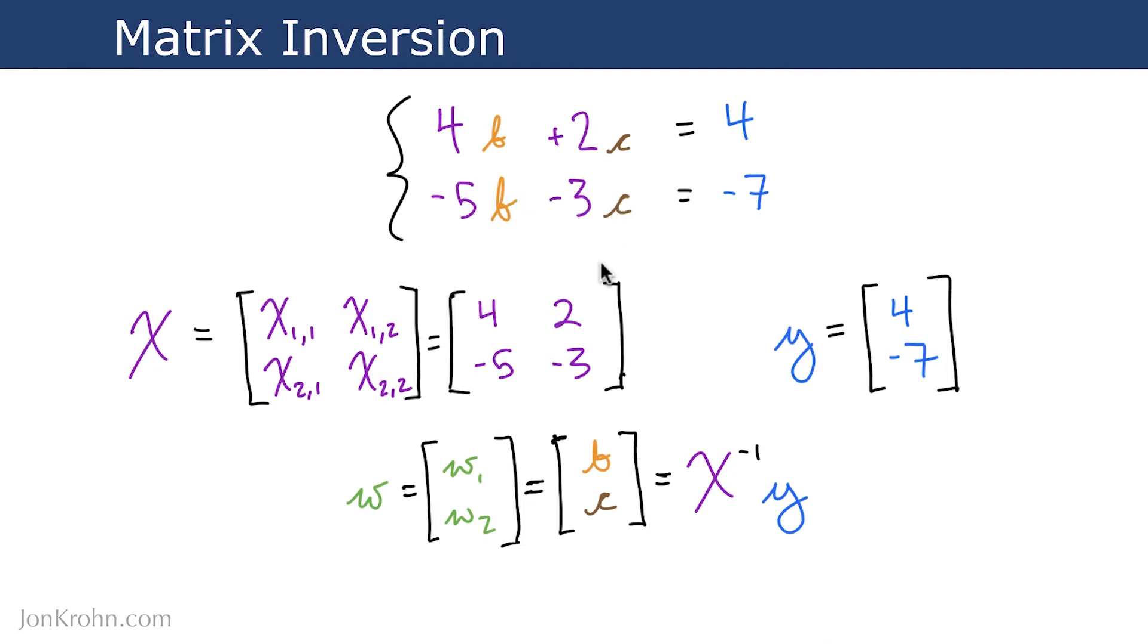So let's take all these values and put them into tensors. We can grab the feature values, and we can put all those features into a feature matrix x, 4, 2, negative 5, negative 3. And then we have a separate vector, tensor y, representing our outcomes that we're trying to predict with our input values. The last thing is to have a weights vector that we're solving for. And so this weights vector here, it has two elements, b and c.